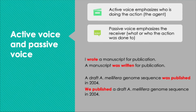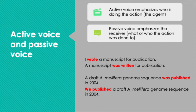Now let's look at some scientific writing examples. 'A draft of the A. mellifera genome sequence was published in 2004.' That's the passive way to write that sentence — we see the receiver, which is the draft genome sequence. The active way to write this is: 'We published a draft of the A. mellifera genome sequence in 2004,' or it could name a person: 'Group X published a draft of the A. mellifera genome sequence in 2004.'